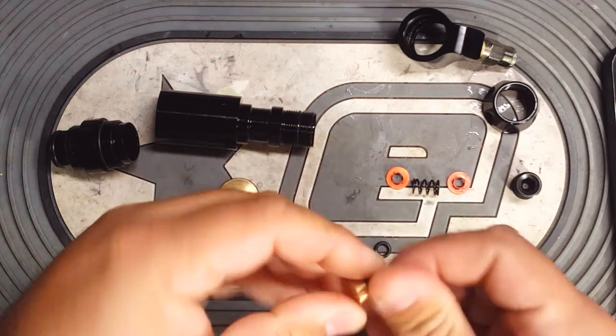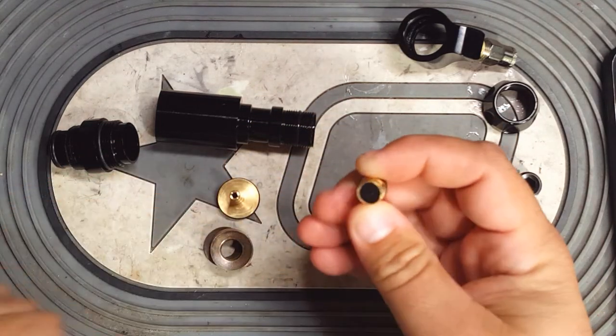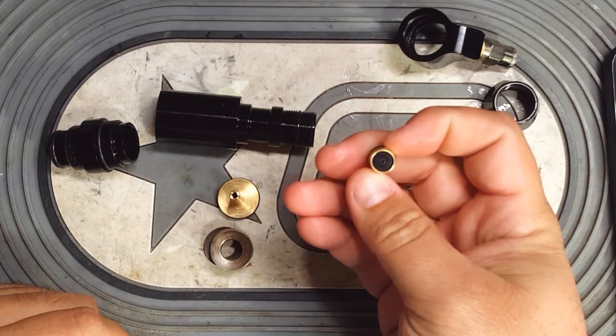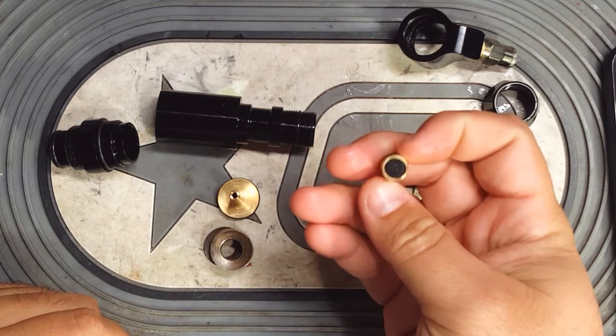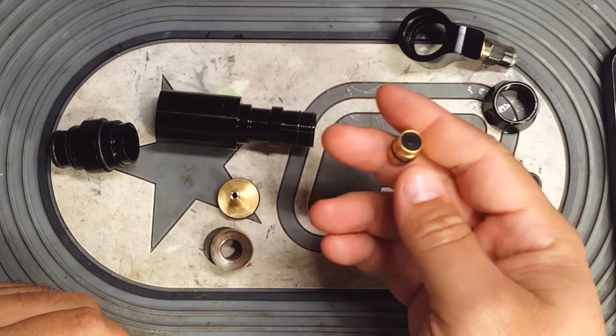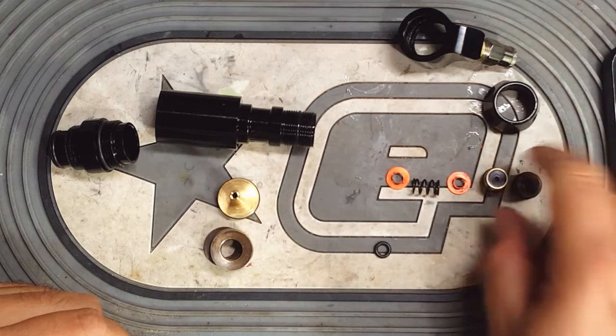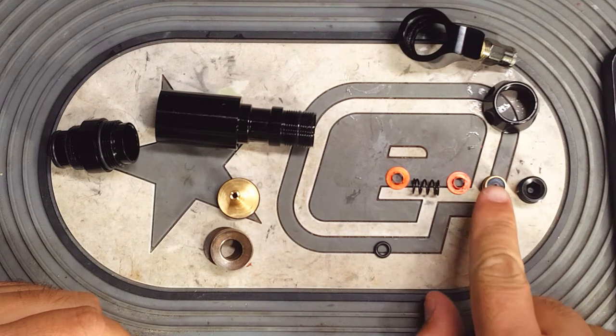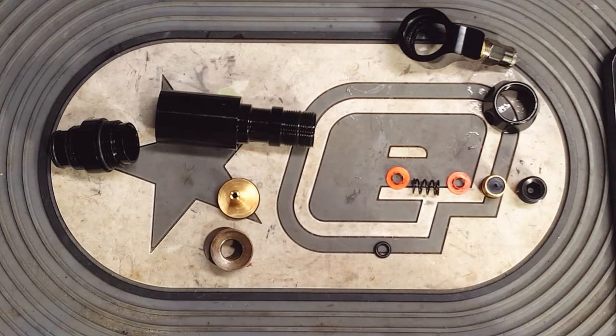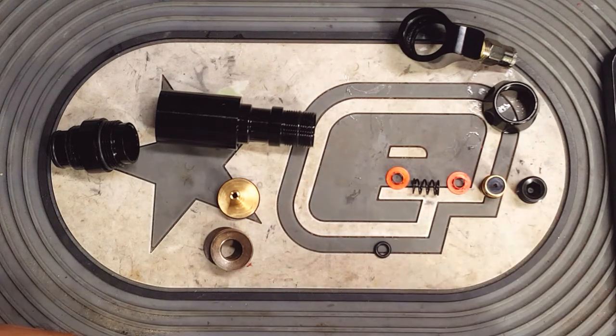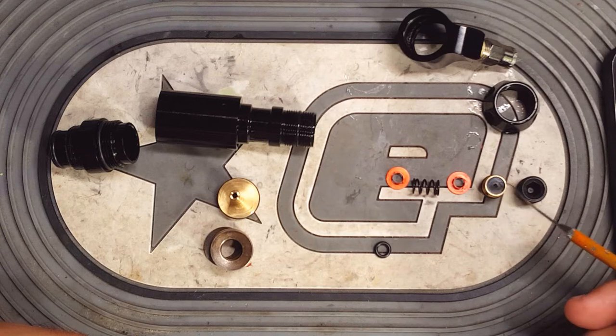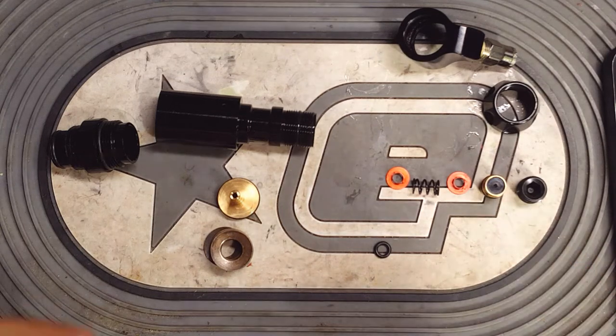The reg seats can be purchased either through Inception Designs. I also believe that Paintball Gateway sells them. This one is still fairly new so the reg seat is in really good shape. So I'm not gonna replace that one. But if you ever have to, you can use a dental pick just to dig that seat out and put a new one in there. Pretty simple.